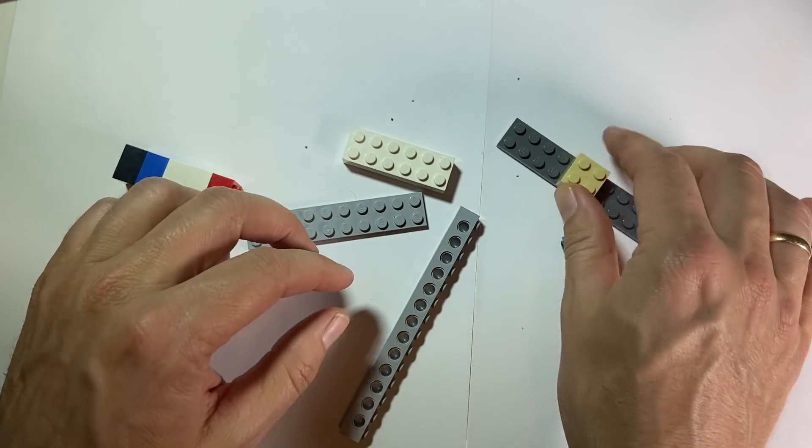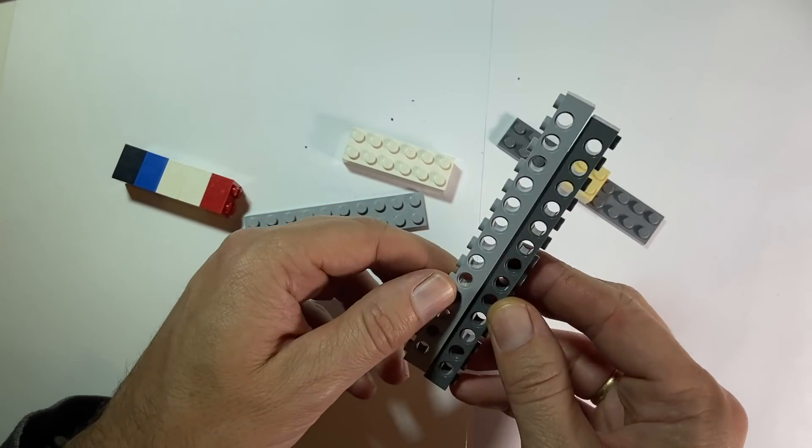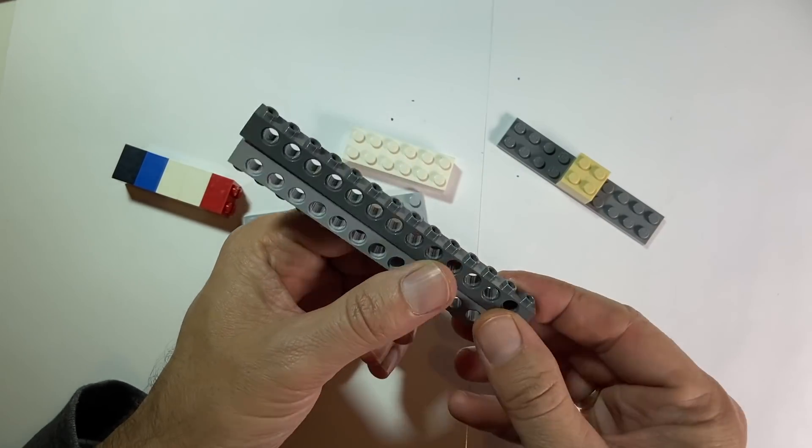I've already picked some pieces out, and so what I want to do is make a base with two arms sticking out. So, I'm going to start. This is my base, and these are my two arms. These have holes in them, and I'm going to use those holes.